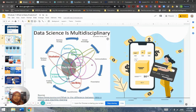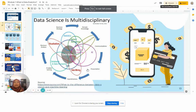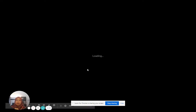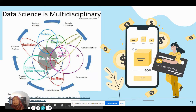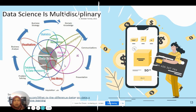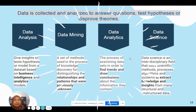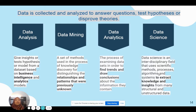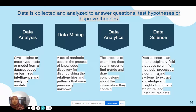Coming back to data science: it is a multidisciplinary field closely related to data analytics. Someone who aspires to be a data analyst needs to acquire competencies in machine learning, databases, data mining, visualization, and pattern recognition. Data science refers to the ability to identify the story behind collected data, applying data analytics and data mining approaches.